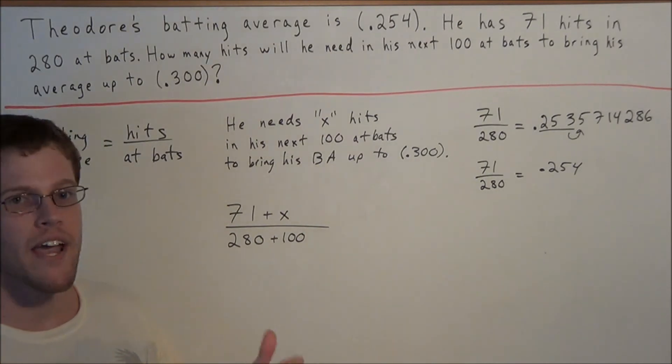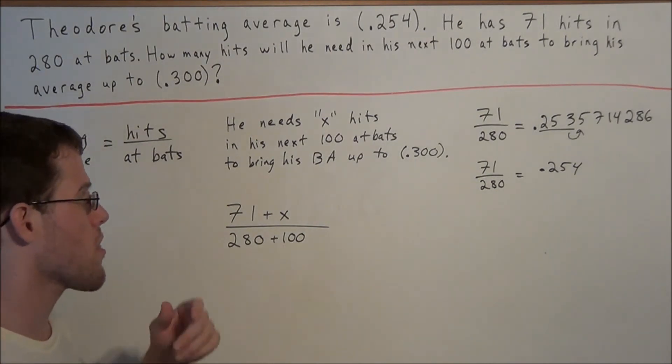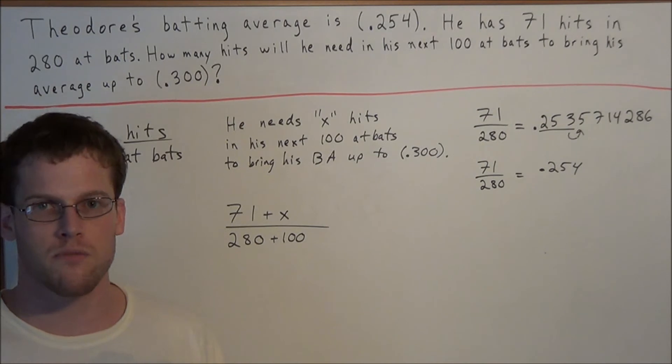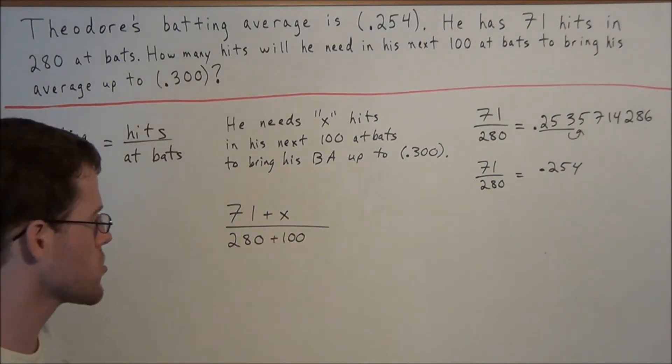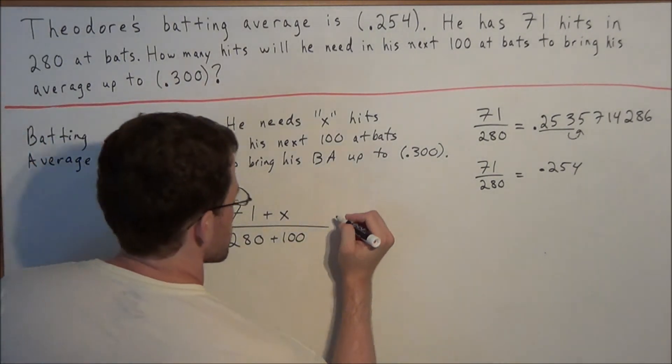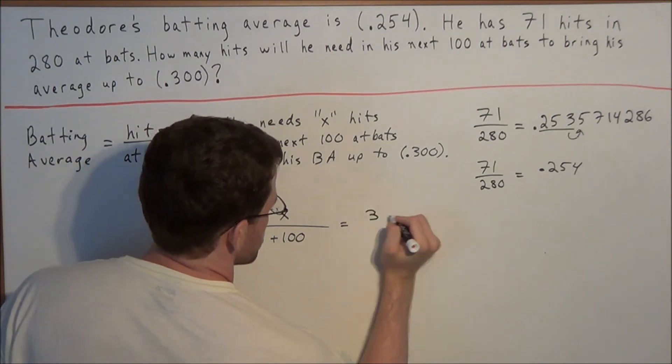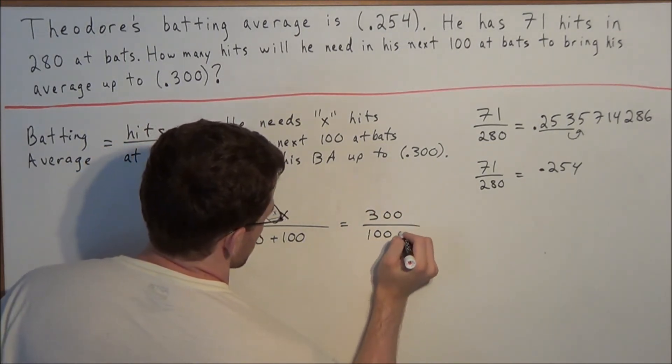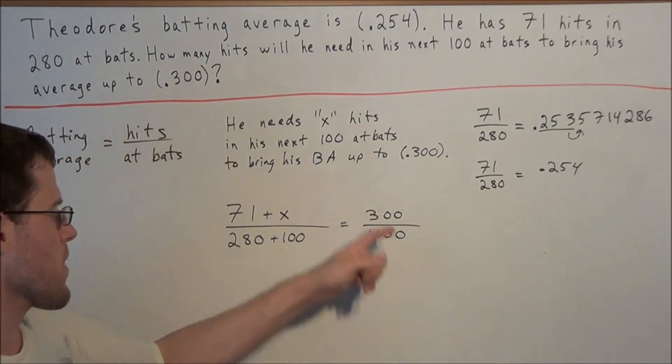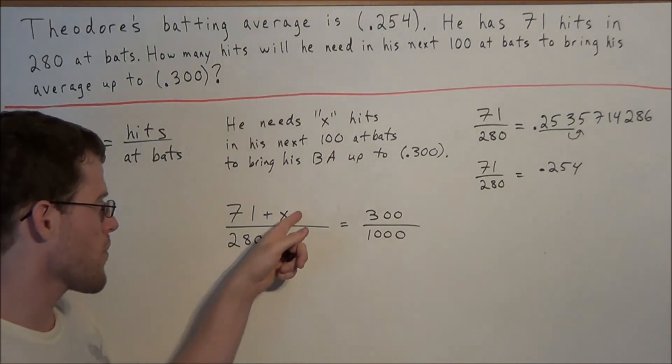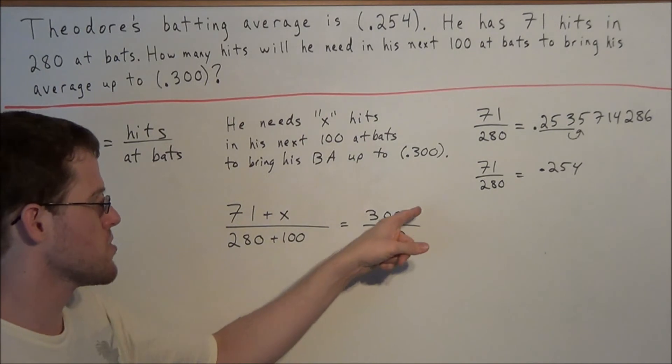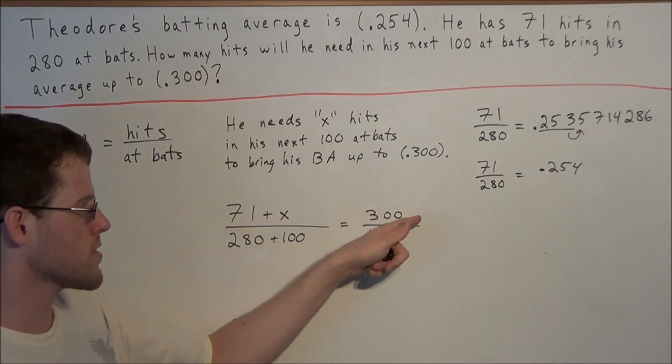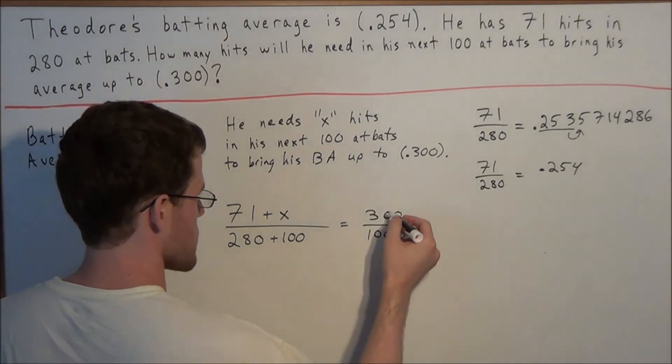Well 300, remember batting averages are defined up to the thousandths place. So what this means is 300 thousandths. So we have 300 divided by 1,000. So we're setting this equal to 300 over 1,000 because we're interested in what value of x brings his average up to 300, which is represented by 300 over 1,000. But now we can simplify this.